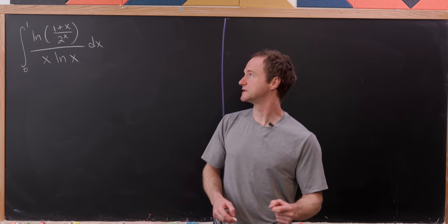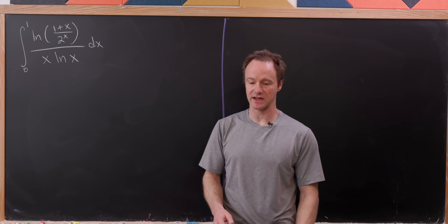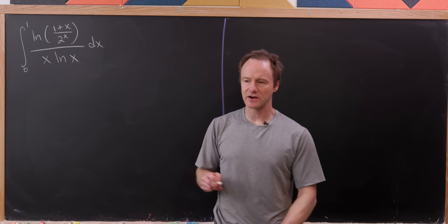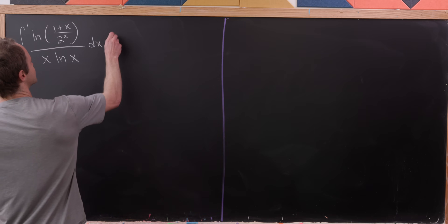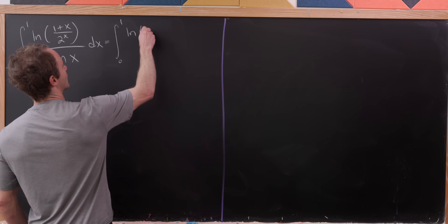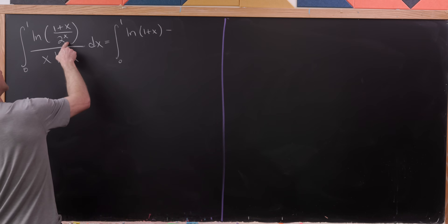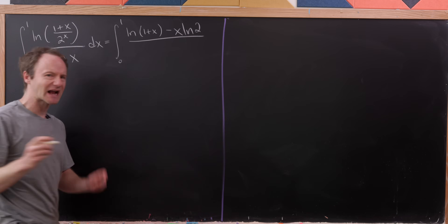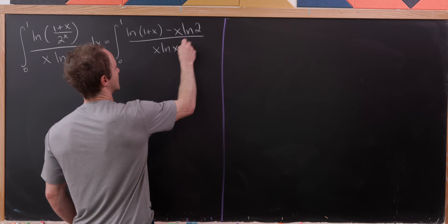We want to evaluate the integral from 0 to 1 of the natural log of (1+x) over 2^x, all divided by x·ln(x). The first thing we're going to use is some standard logarithm identities to simplify that numerator. We can write this as the natural log of (1+x) minus the natural log of 2^x, which equals x·ln(2) using the exponential rule for logarithms, all over x·ln(x) dx.